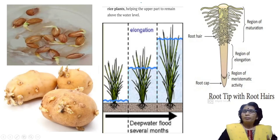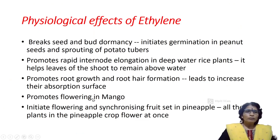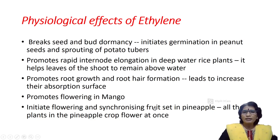Ethylene promotes root development and root hair formation. Water absorption takes place through root hairs, so as the number of root hairs increases, the water absorption capacity also increases. In mango trees, flowering is also initiated and promoted by ethylene. Ethylene also initiates flowering and synchronizes fruit set in pineapple.